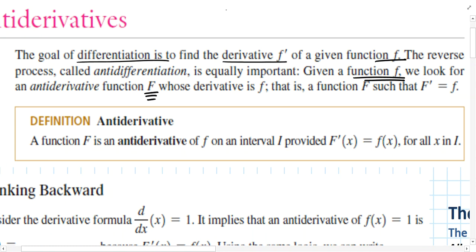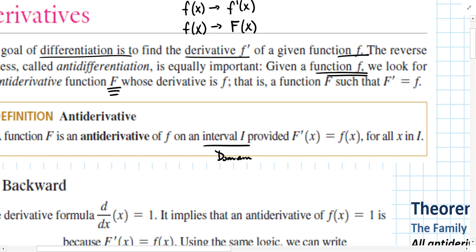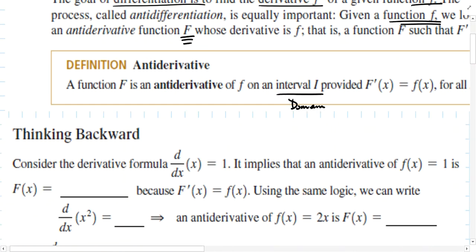In the first half of the class, we were given f(x) and we would find f'(x). Now, we're given f(x) and the antiderivative would be capital F(x). The formal definition is: a function capital F is an antiderivative of f on an interval or domain, provided that the derivative of the antiderivative is equal to the original function for all x in that interval.